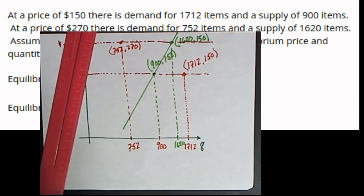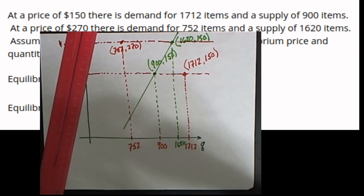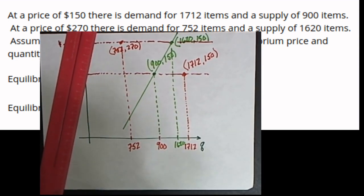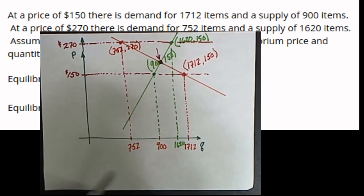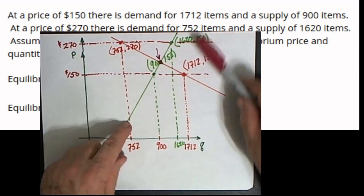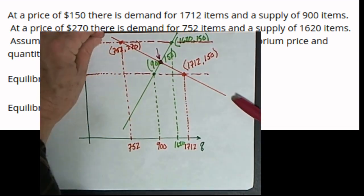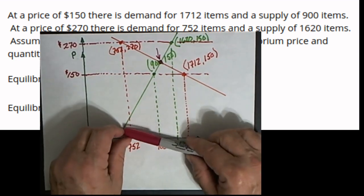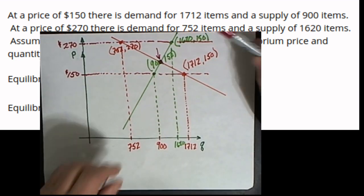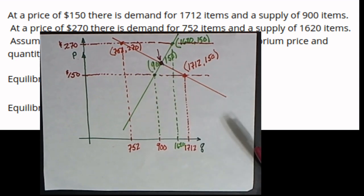So assuming this is a linear function then that green line represents the supply curve and this orange line represents the demand curve. And there's the equilibrium point where those two cross. If we could build the equation for this demand curve and the equation for the supply curve, then we could find the solution of those two equations as a system of equations and that would give us the equilibrium point.